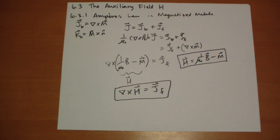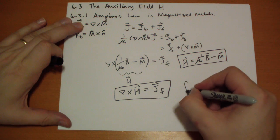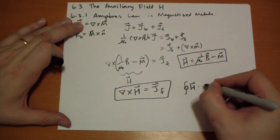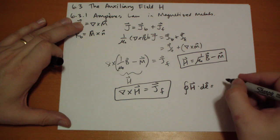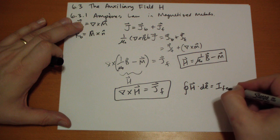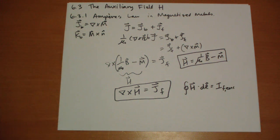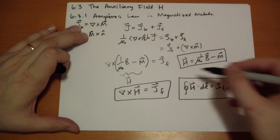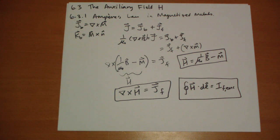You can rewrite this in integral form. The closed loop integral around some loop of H dot dL is going to give you the total free enclosed current inside that loop. So we have an Amperian loop, we count up the charge passing through that loop, and that gives you the H field dotted along that loop.